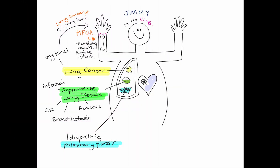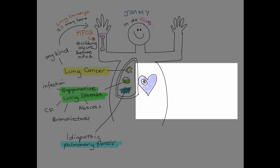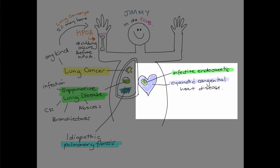Moving on from the lungs to the heart, there are basically two things to commit to memory: cyanotic congenital heart disease, represented by a blue heart, and infective endocarditis, represented by a bacterial ball. So we could assess Jimmy, who is in the club, for the features of those conditions.